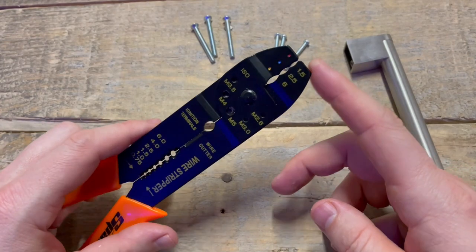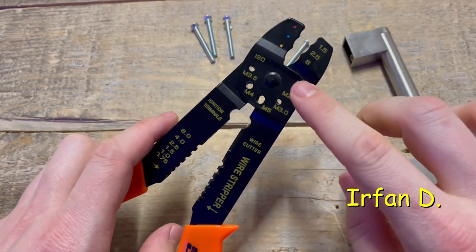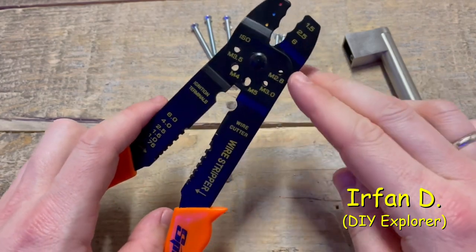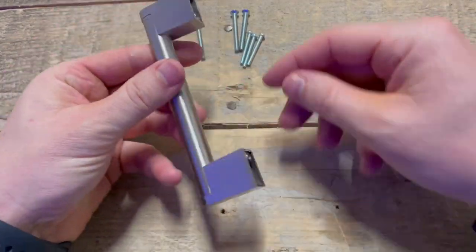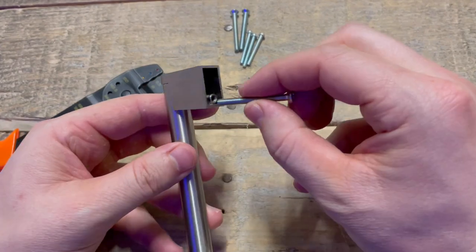Hey guys, welcome to the how-to channel. Today I'm going to show you how to use these holes on wire strippers. Right here I have one cabinet door handle and I want to use these screws for this handle.